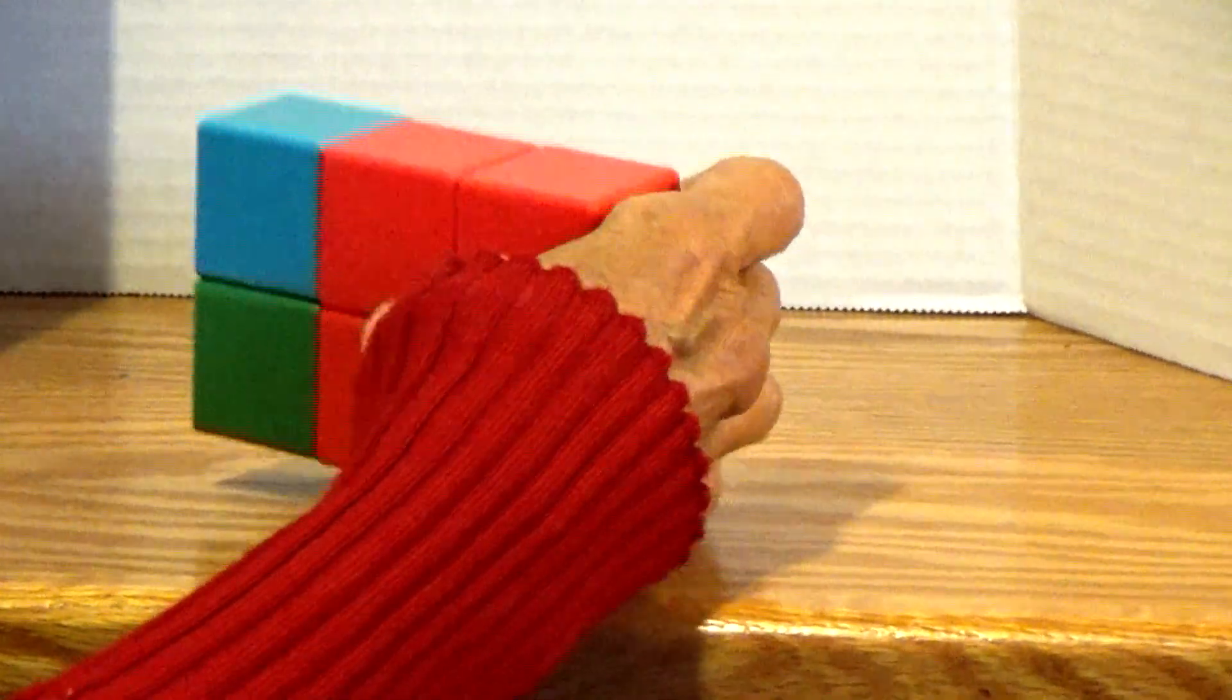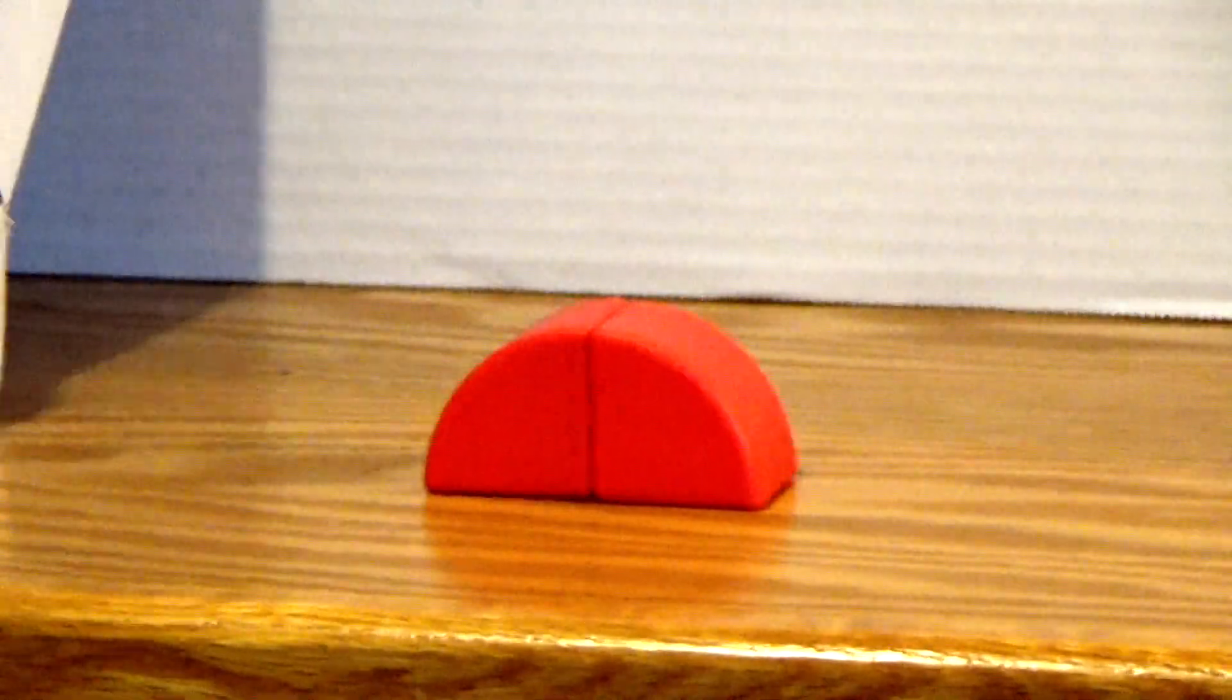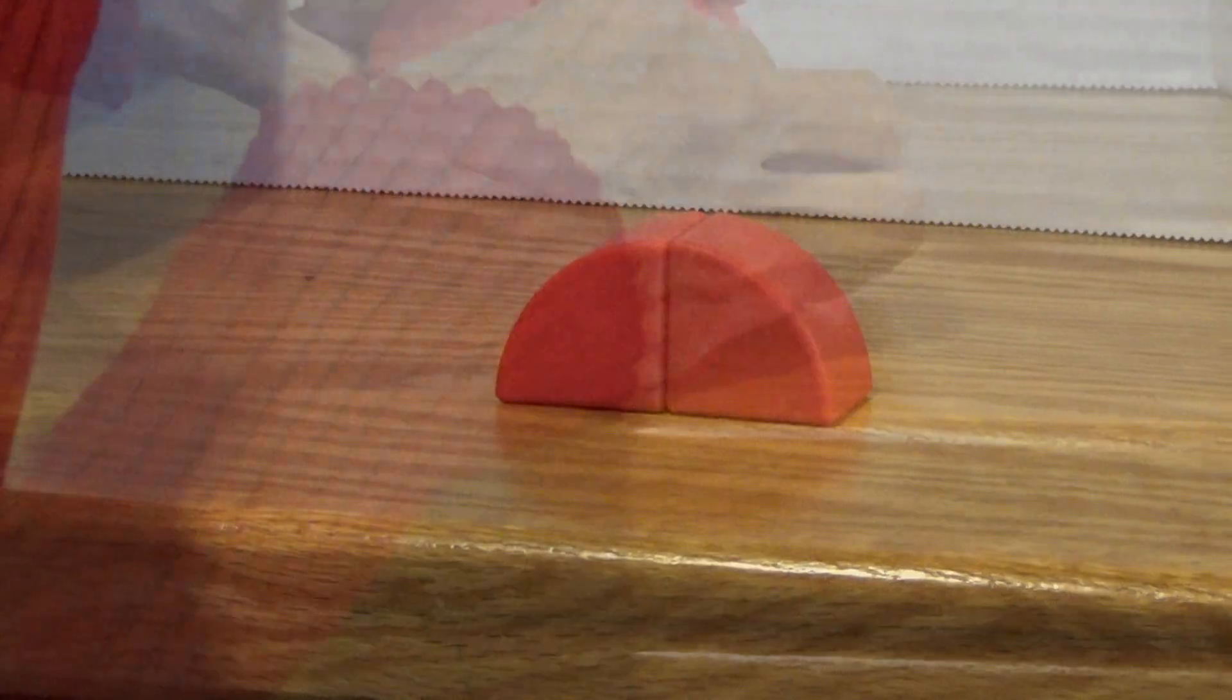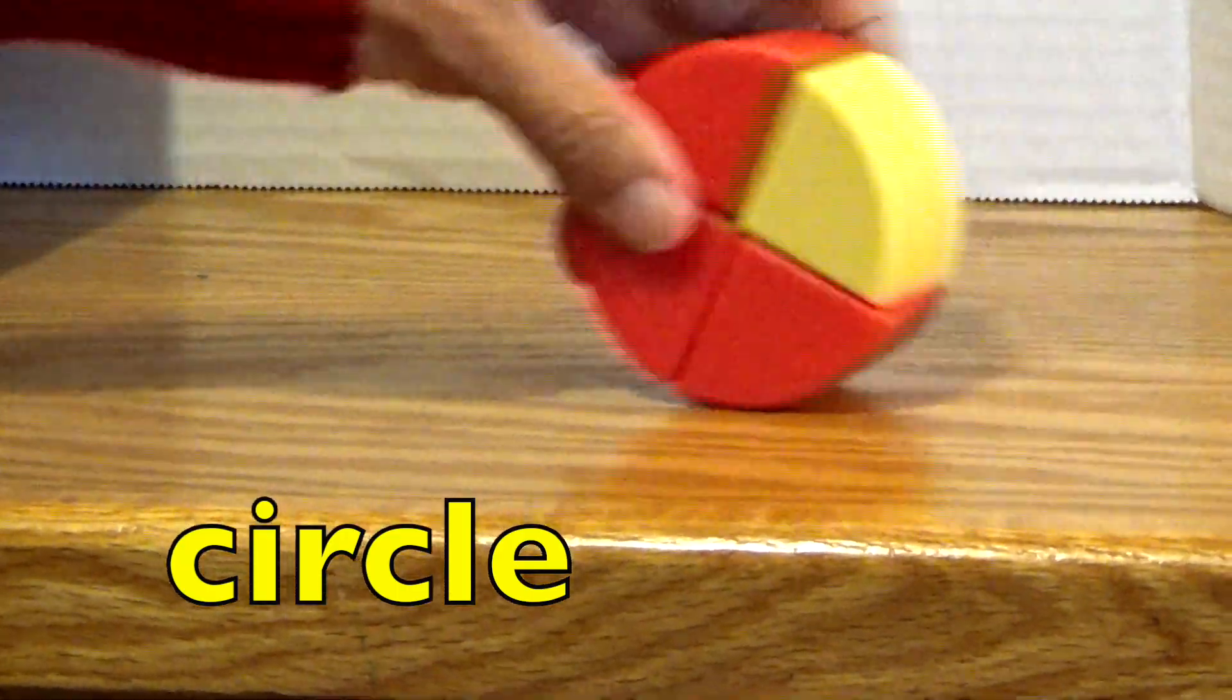Let's see if we can make another shape. Let's try these. That is a semicircle. Let me see if I can find the other side of it. Look at that, that's a circle.